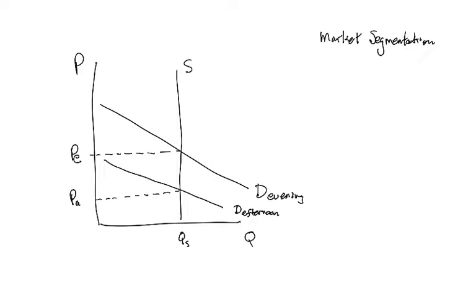The people who buy at a lower price can't turn around and sell that item to those who would have had to pay the higher price. So a perfect market segmentation is an afternoon ticket to the theater and an evening ticket to the theater.